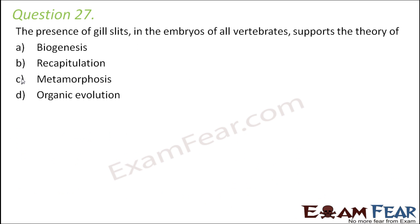Question number 27. The presence of gill slits in the embryos of all vertebrates supports the theory of: biogenesis, recapitulation, metamorphosis, or organic evolution? Obviously, it is the theory of biogenesis. As we have learned before, biogenesis tells that ontogeny repeats phylogeny. So here the same thing happens. During embryogenesis, when the embryos grow and develop, that's embryogenesis which is ontogeny, life history of an organism. There you see gill slits. Gills are present in the fishes. So it shows that evolutionary relationship between the vertebrates and the fishes. So this is biogenesis.